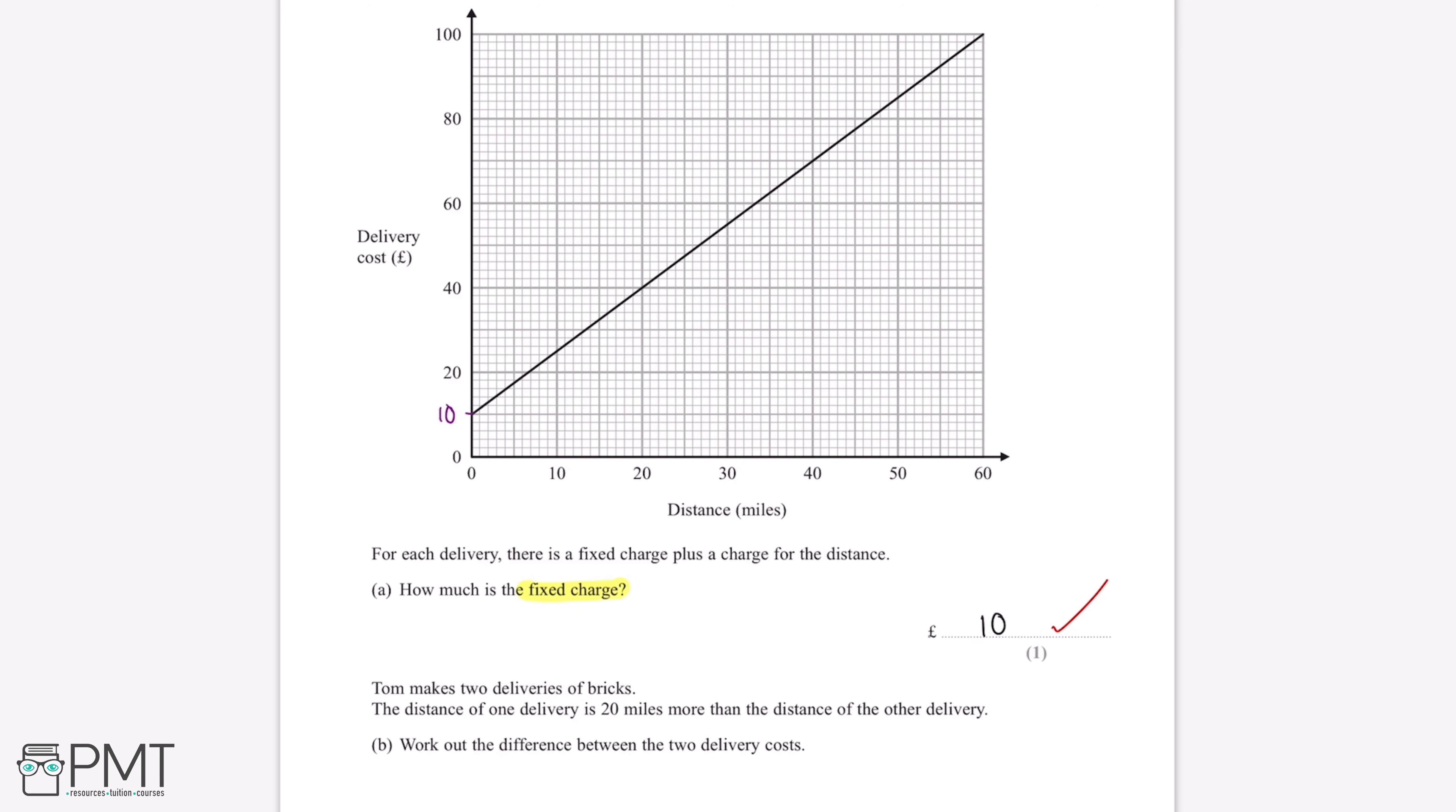Tom makes two deliveries of bricks. The distance of one delivery is 20 miles more than the distance of the other delivery. Work out the difference between the two delivery costs. For this question, we can choose two different distances each 20 miles apart and then work out the difference between these two prices.